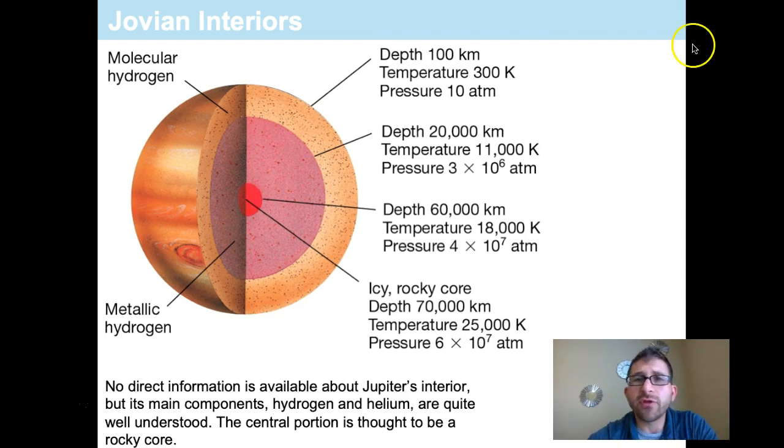First, the first 100 kilometers or so are going to be at a temperature of about 300 Kelvin. Keep in mind that that's right above the temperature of the melting of water ice, so like right around room temperature or so. So, its pressure is about 10 atmospheres of Earth pressure.